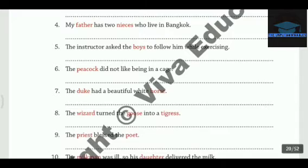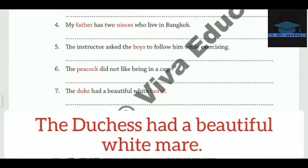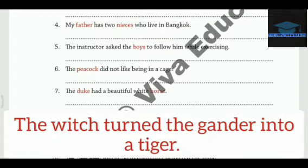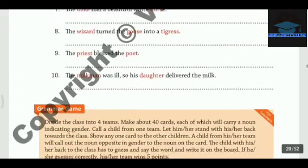The next sentence has two words: Duke and Horse. Let's change them. The duchess had a beautiful white mare. Number eight has three words. Let's change them one by one: The witch turned the gander into a tiger. So three words have been changed here.